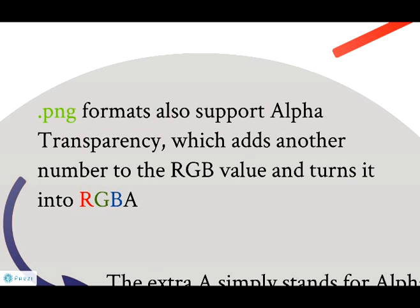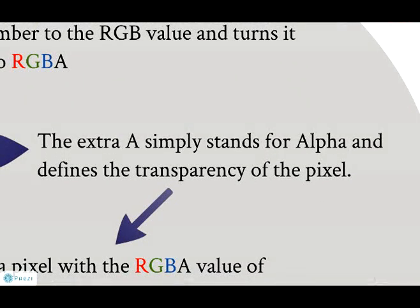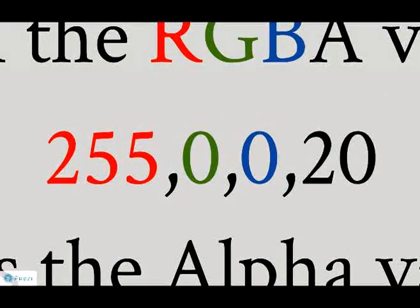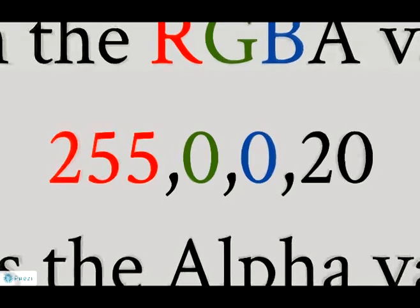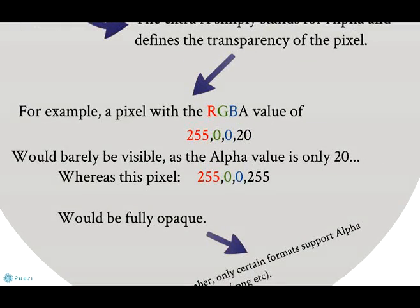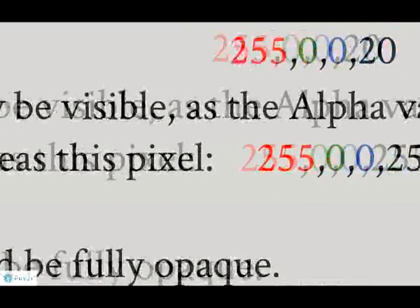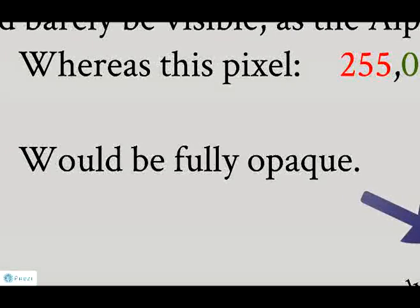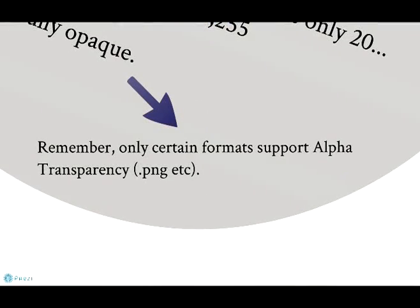.png formats also support alpha transparency, which adds another number to the RGB value and turns it into RGBA. This extra A simply stands for alpha and defines the transparency of the pixel. For example, a pixel with the RGBA value of 255, 0, 0, 20 would be barely visible as the alpha value is only 20, whereas a pixel of 255, 0, 0, 255 would be fully opaque. Remember, only certain formats support alpha transparency, for example .png.